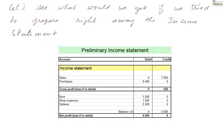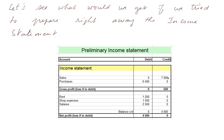Let's see what we would get if we try to prepare the income statement right away. From the trial balance, we would extract the sales and the various charges accounts: sales of 7,000, purchases of 6,400, and the other charges — rent, shop expenses, and salaries.